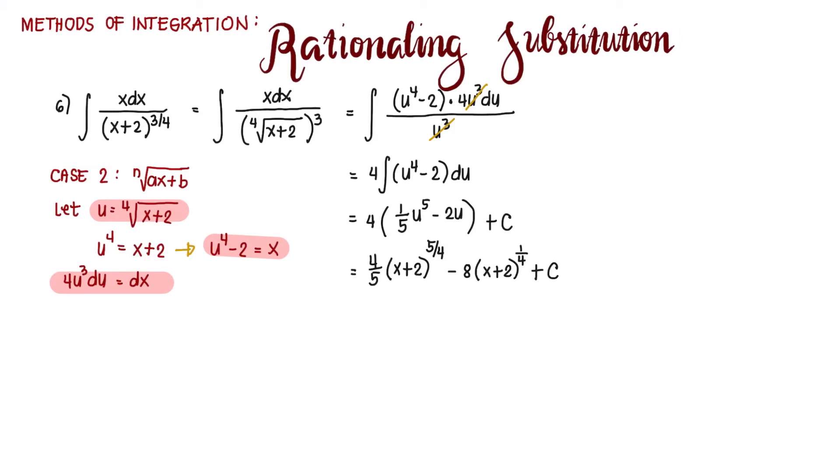For a simplified form, yes, this is an answer already. But for a factored out form, instead of substituting (x+2)^(1/4) directly, we can factor out u, which gives us 4u times (u^4/5 - 2) plus C. So that's 4u times (u^4 - 10)/5 plus C.